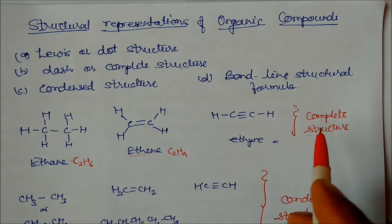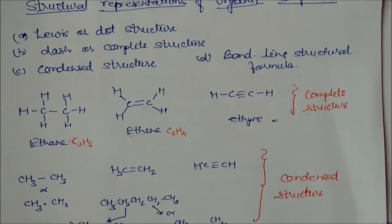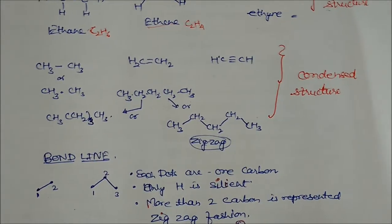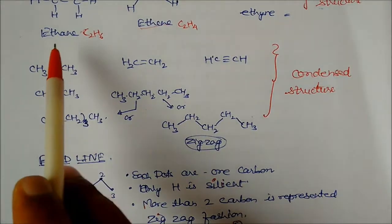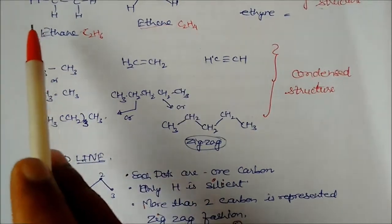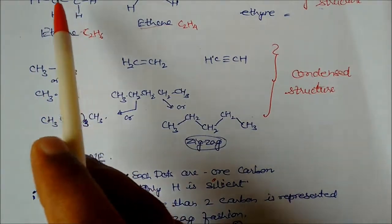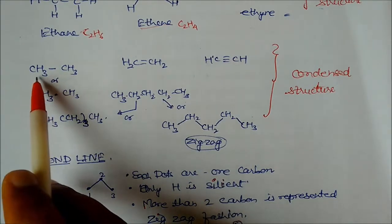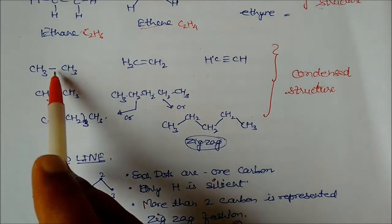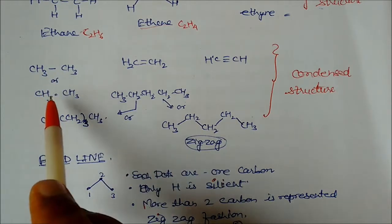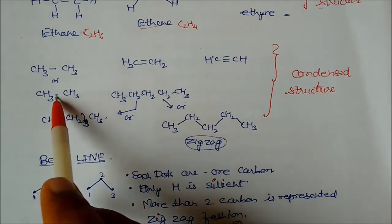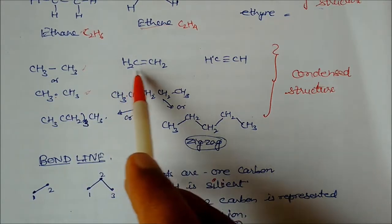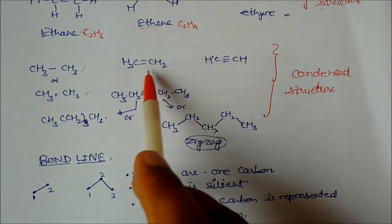The second type is the condensed structure. In condensed structure, for ethane we write CH3CH3. The bond between carbon and hydrogen is omitted. You can even omit the bond between the two carbons as well, so we can represent ethane in two ways using the condensed structure.